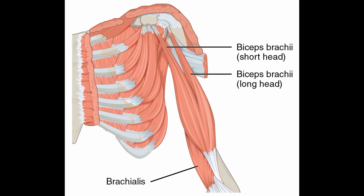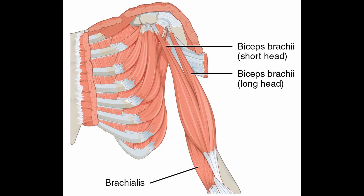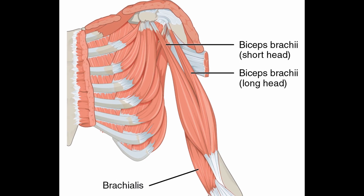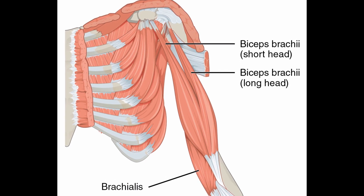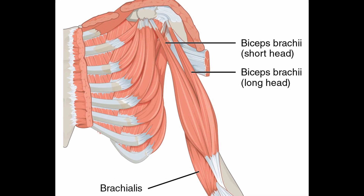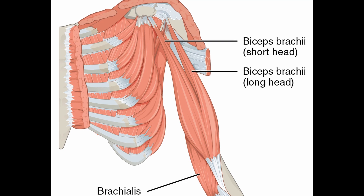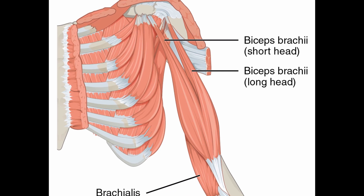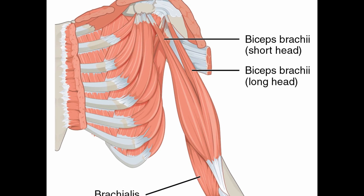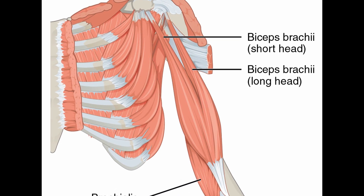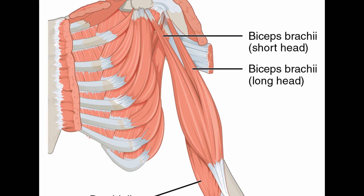The biceps muscle has two distinct origin points, also known as the short head and the long head. These heads were then merged together to form one muscle, but biceps is still the shortened version and not technically the right term.